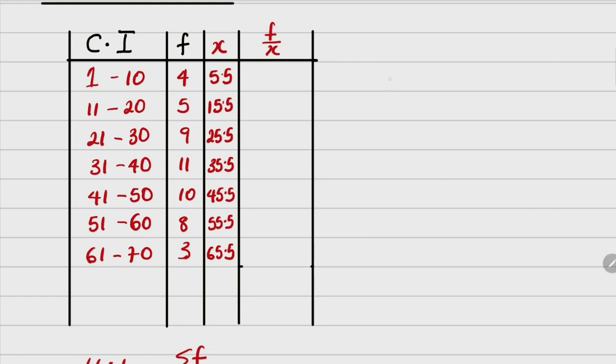How do we get f over x? From the expression, you pick the value. For example, the first one is 4 over 5.5, and 4 over 5.5 will give you 0.7273. So this column is 0.7273. The next one is 5 over 15.5, which will be 0.3226. The next will be 0.3529. You have to be careful doing this so you don't make any mistakes.